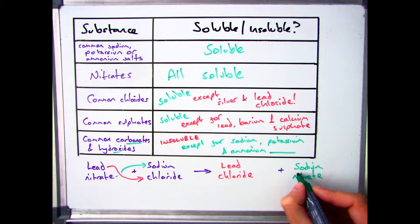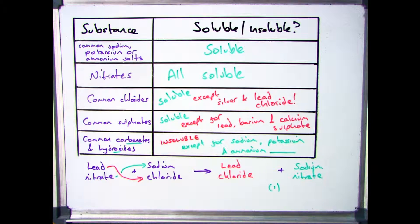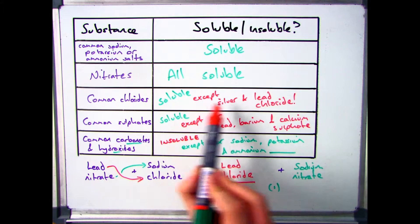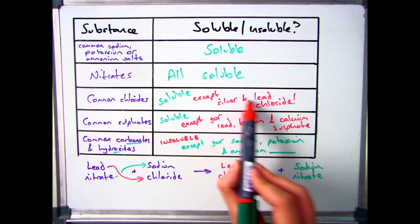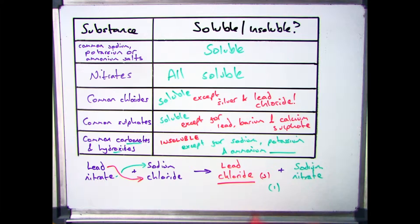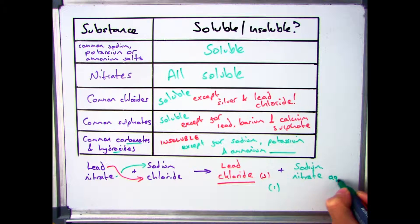The next thing you need to be able to do is figure out whether you've got a precipitate, so you need to have a look at your rules. If we start off with lead chloride, we look up chlorides in the table. Chlorides are all soluble except for silver and lead, therefore lead chloride is going to be my precipitate and it's going to give me a solid. Sodium nitrate - all nitrates are soluble, therefore it will be aqueous in solution.